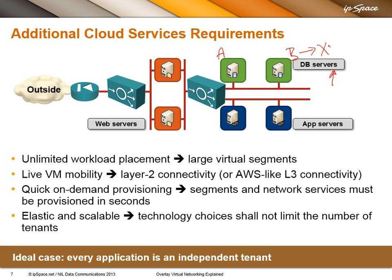The technology choices we make should not limit the number of tenants. You might say 4,000 VLANs is good enough and you'll never have more than 4,000 tenants. But if you deploy each application as an independent tenant and an application has something like four segments — as the simple application shown here has four independent segments plus a fifth — then 4,000 VLANs quickly becomes only 1,000 applications, which is not really that big a number. So we shouldn't limit ourselves to a small number thinking we will never need more than that.